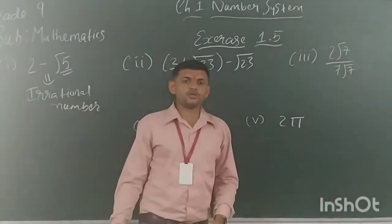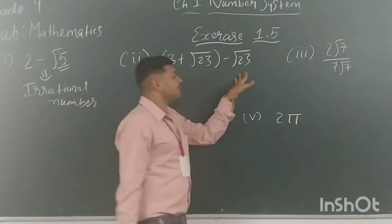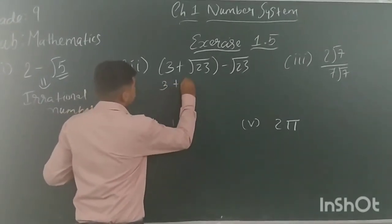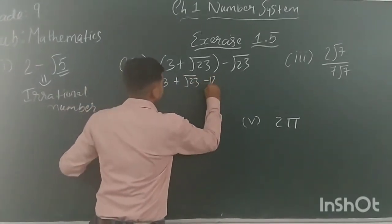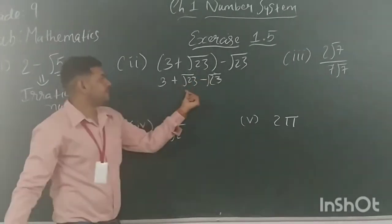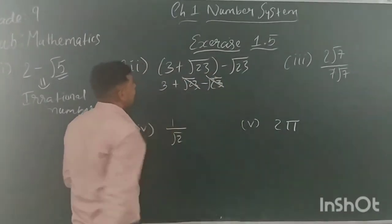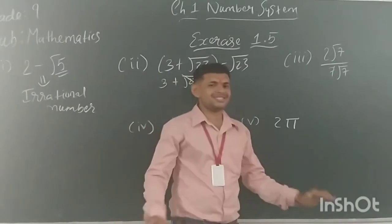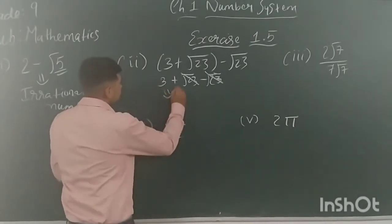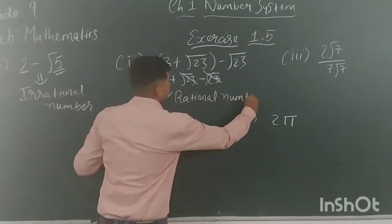Root 23: that is the square root of a prime number, so it would be irrational. But here we can carry out the operation further. If you open the bracket, you get 3 plus root 23 minus root 23. Same number with a subtraction sign — they cancel out, giving zero. So the result is only 3, which is a rational number.